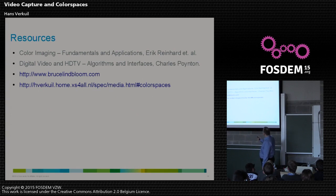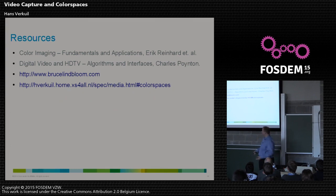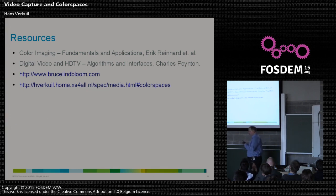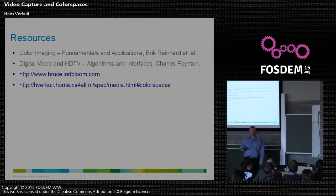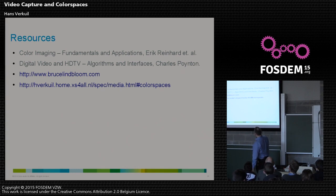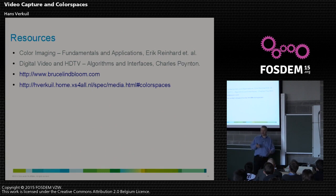Some resources: two books — the first is very practical, the second goes a lot more into the theory of color, its physical and biological aspects. One website I found very useful goes deep into the mathematics of going from one color space to another and how the calculations work. And the Video for Linux specification — the latest version is on my website — where I've completely rewritten the color space chapter as a fairly extensive and practical guide to how color spaces work.